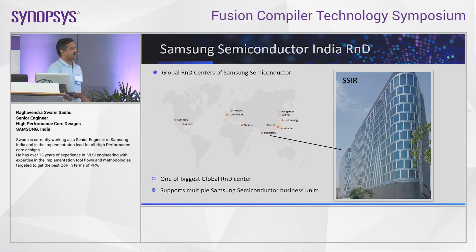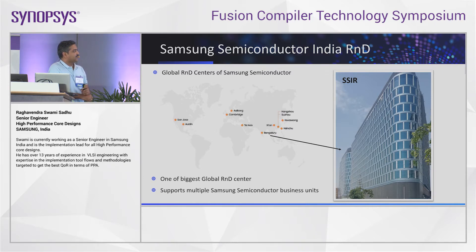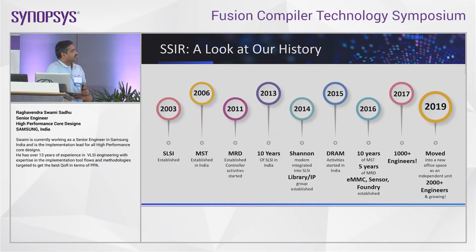A quick marketing slide: we have our semiconductor divisions overall in 10 units across the globe. This is our new SSIR office located in Bengaluru, one of the biggest R&D centers, with a lot of semiconductor business units. Our journey started in Bengaluru in 2003, and over multiple years, many BUs were added into the semiconductor unit.